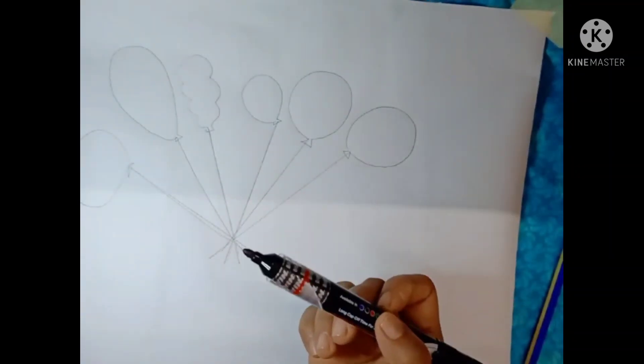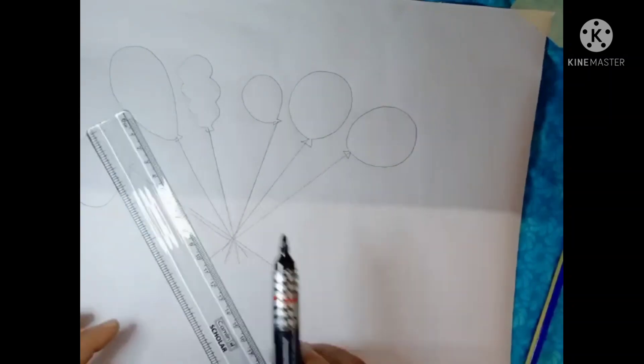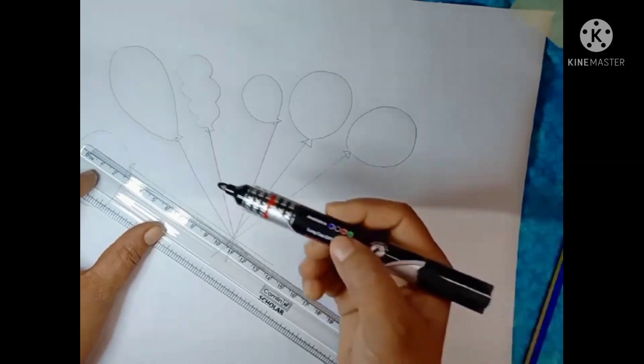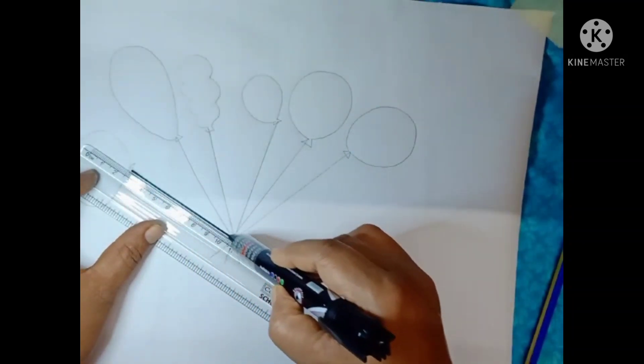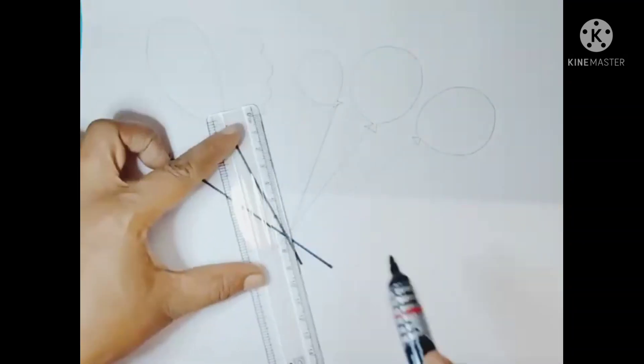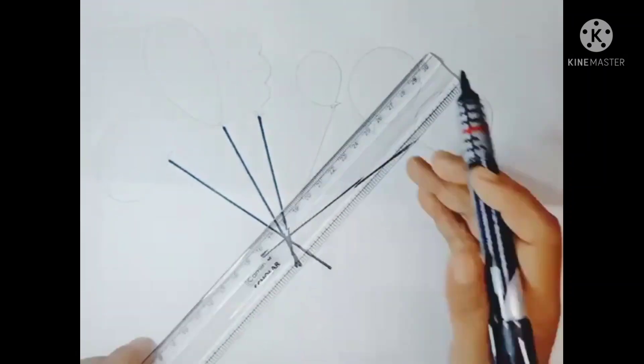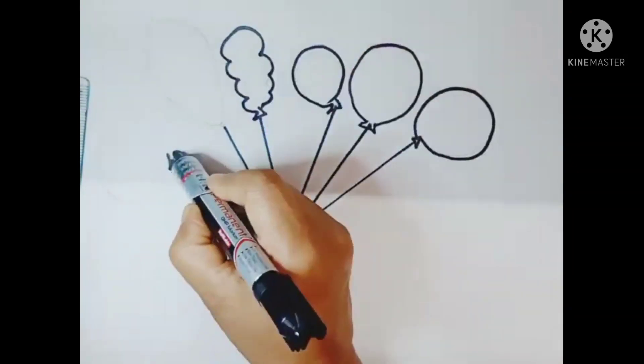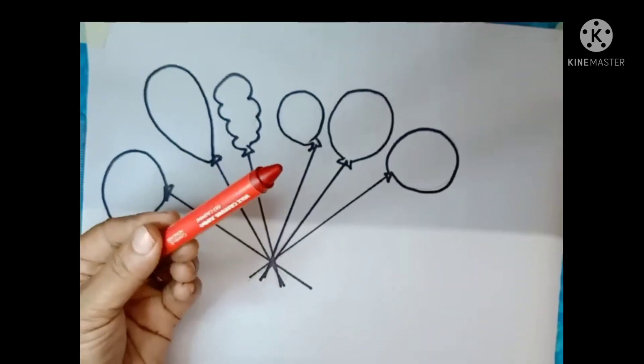Then you take a marker so that we can beautify it. Darken the lines with the marker pen. Like this. It is very nice. Darken the balloons also.